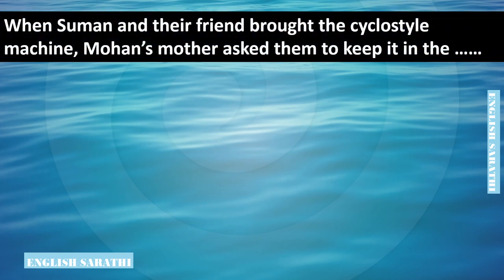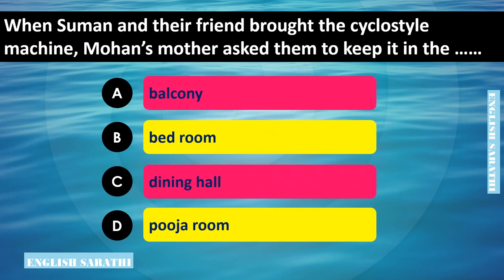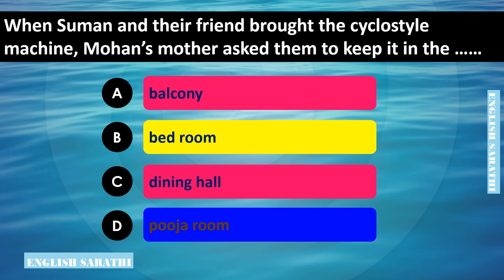Once Suman and their friend brought the cyclostyle machine. Mohan's mother asked them to keep it in the dash. Options are: option A - balcony, option B - bedroom, option C - dining hall, option D - puja room. The correct option is option D - puja room. Mohan's mother asked them to keep it in the puja room.